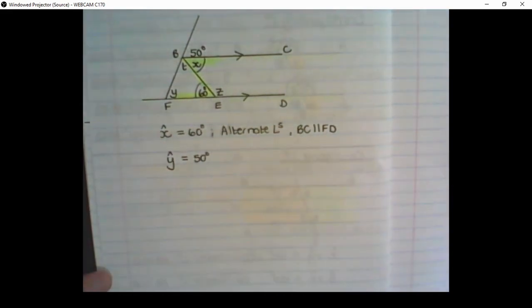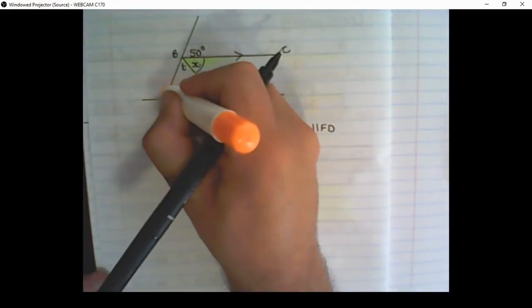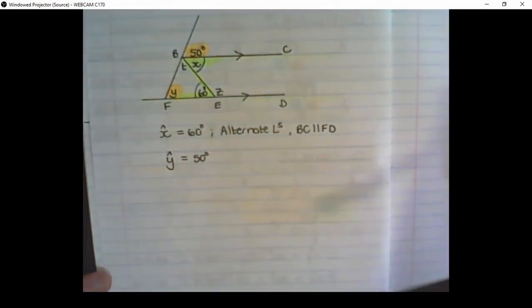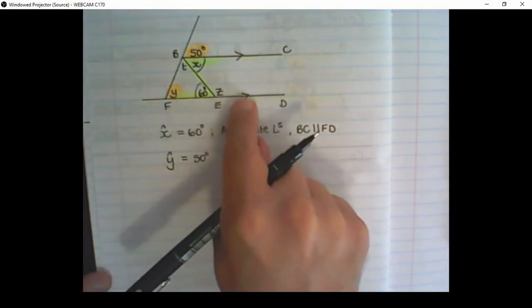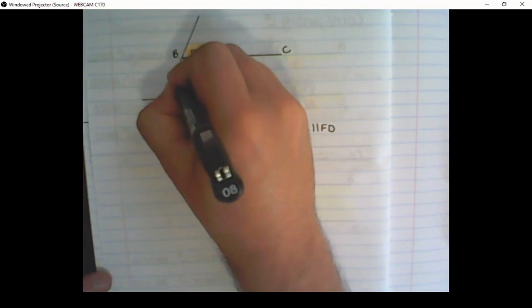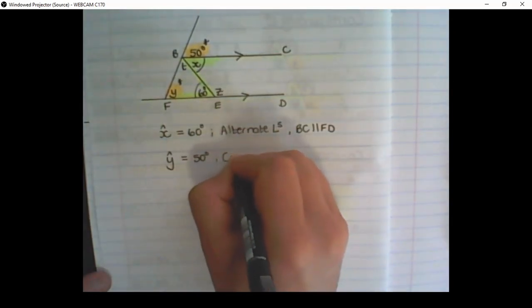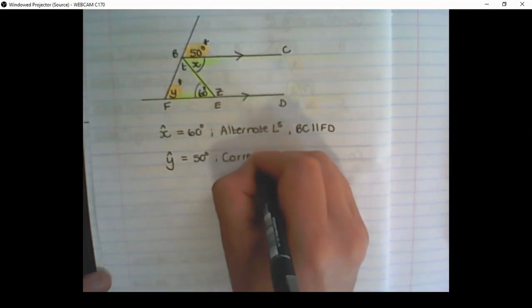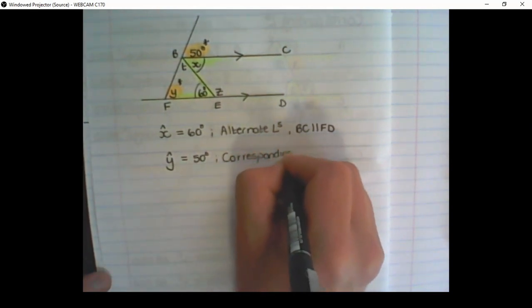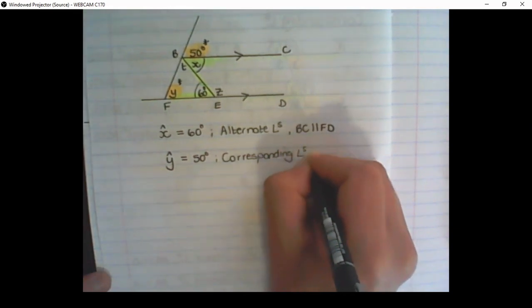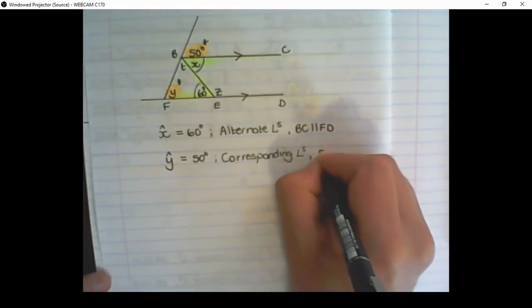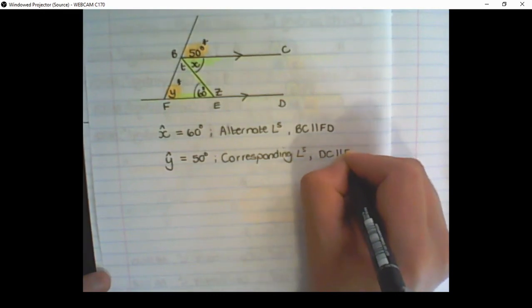Moving on to Y: Y is equal to 50 degrees. Looking at the parallel lines, Y and the 50 degrees are both on top of the parallel lines, so these are called corresponding angles. The reason is corresponding angles, because BC is parallel to line FED.